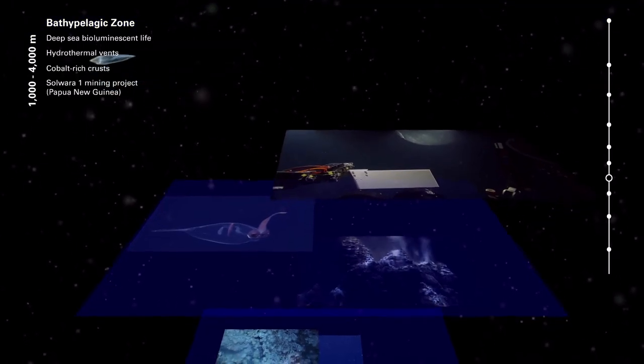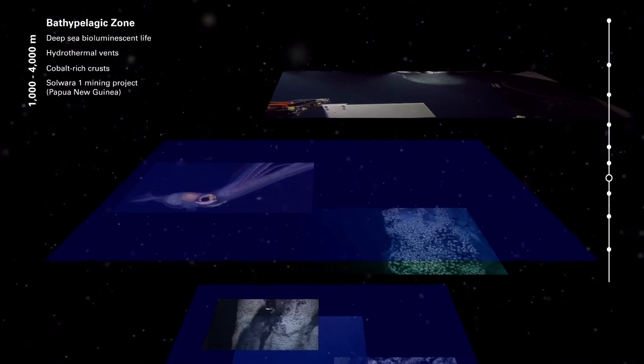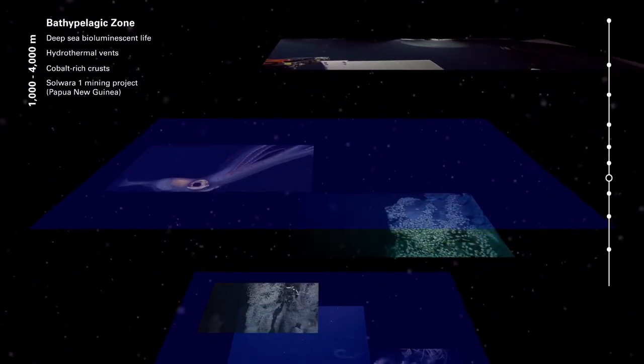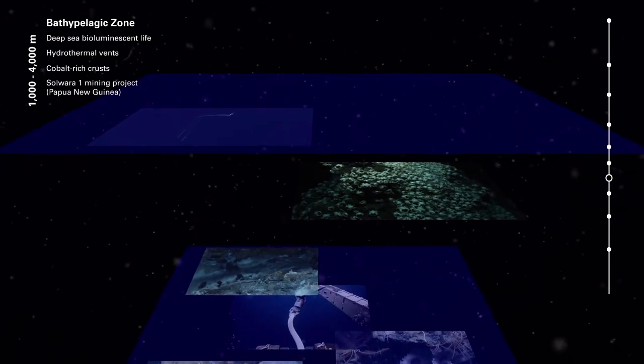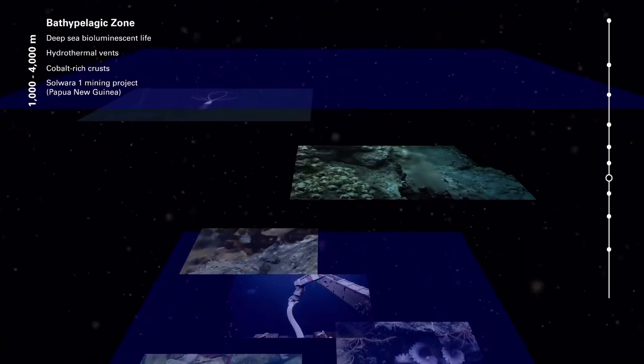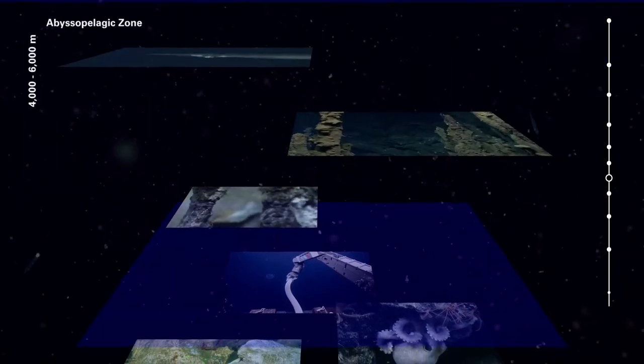These animals can convert toxic chemicals into energy, revealing themselves to be complex life forms. Some microbiologists see hydrothermal vents as central to research on the origins of life on earth.